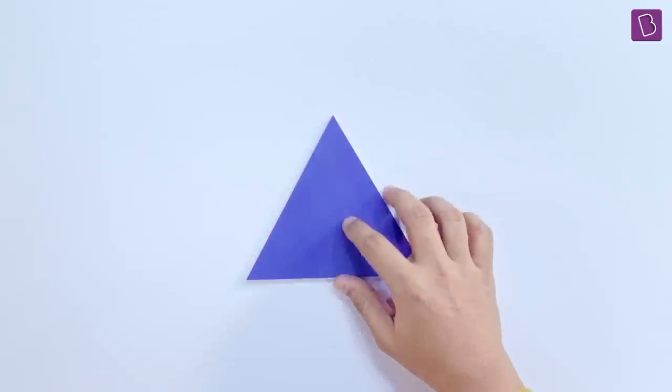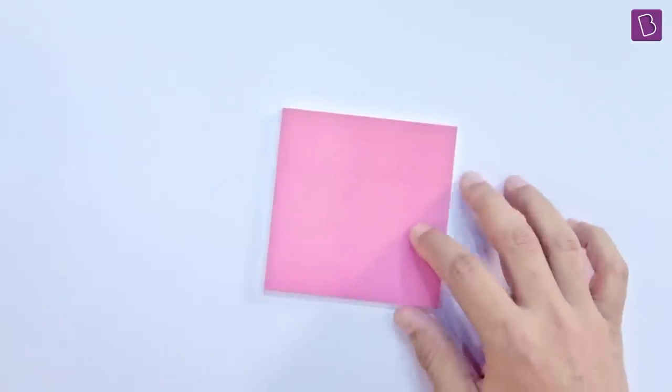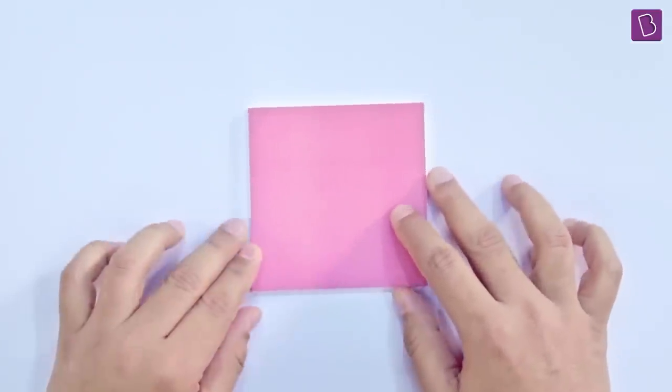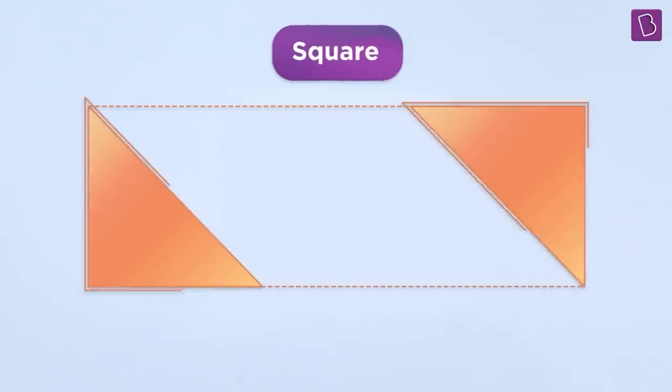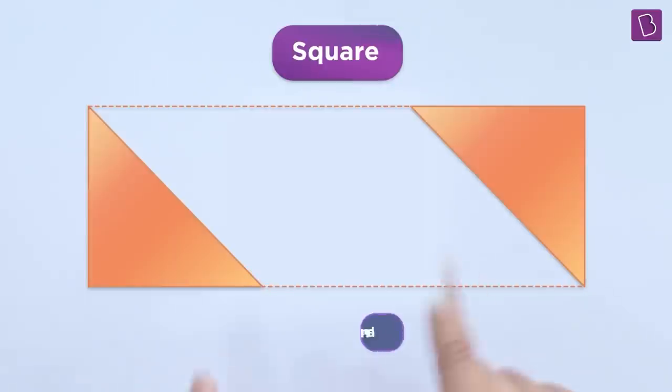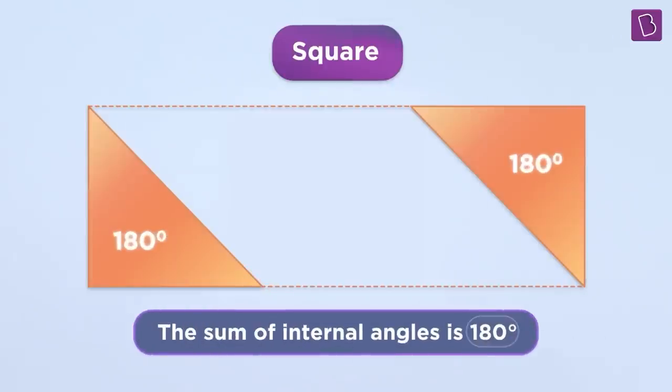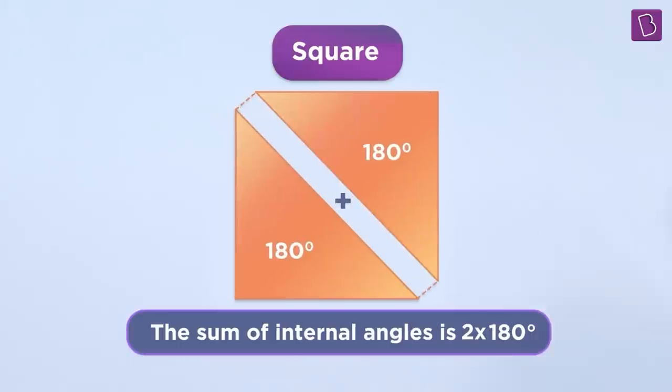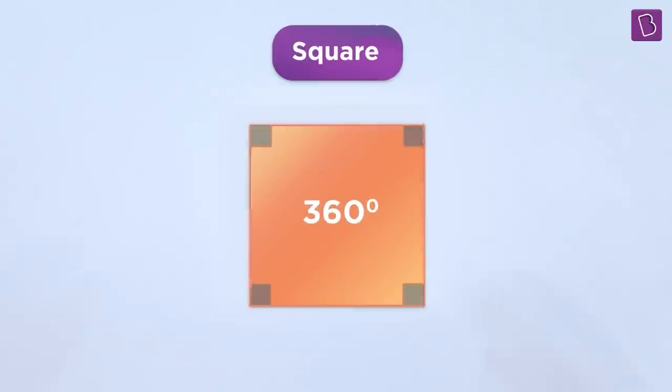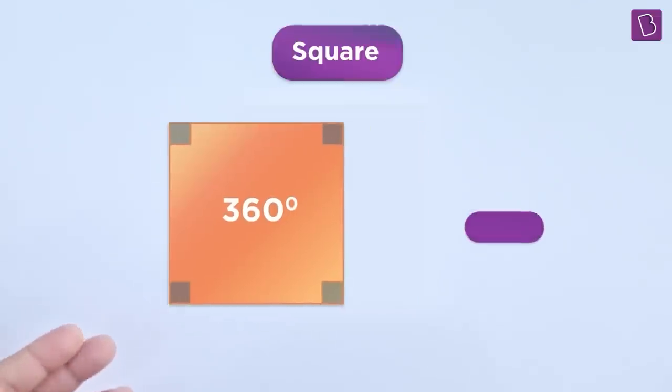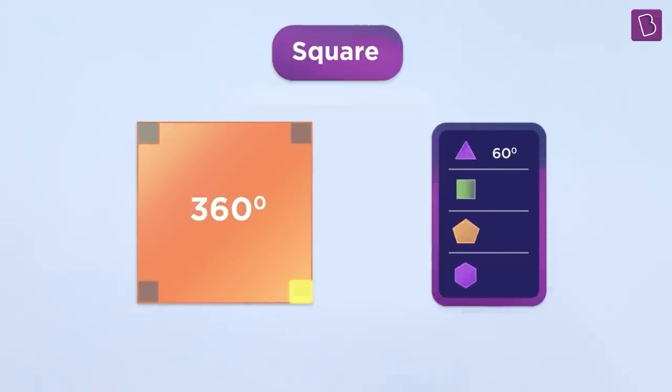Now, in the case of four-sided figure, like our square, check this out. This square can actually be thought of as two triangles. Now, the sum of interior angles in a triangle is 180 degrees. In a square is twice of 180 degrees, which is 360 degrees. Four sides, four angles, 360 degrees and one-fourth of that is 90 degrees.